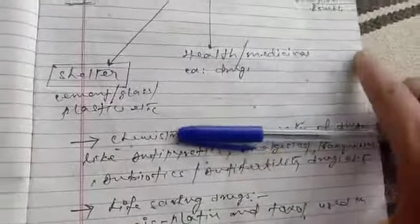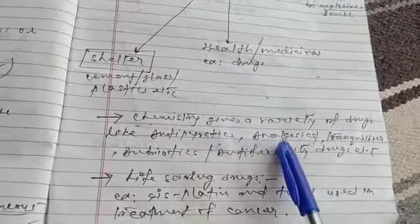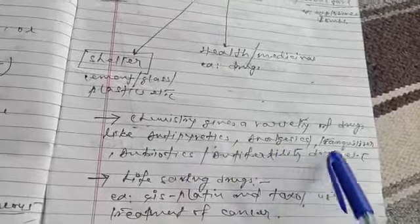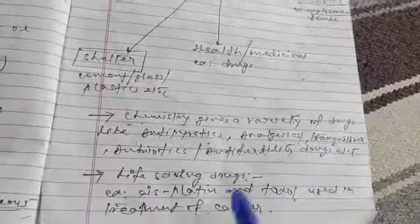Chemistry gives a variety of drugs like antiparasitics, analgesics, tranquilizers, antibiotics, antifertility drugs, etc. Cisplatin and taxol are used in treatment of cancer, according to your NCERT.